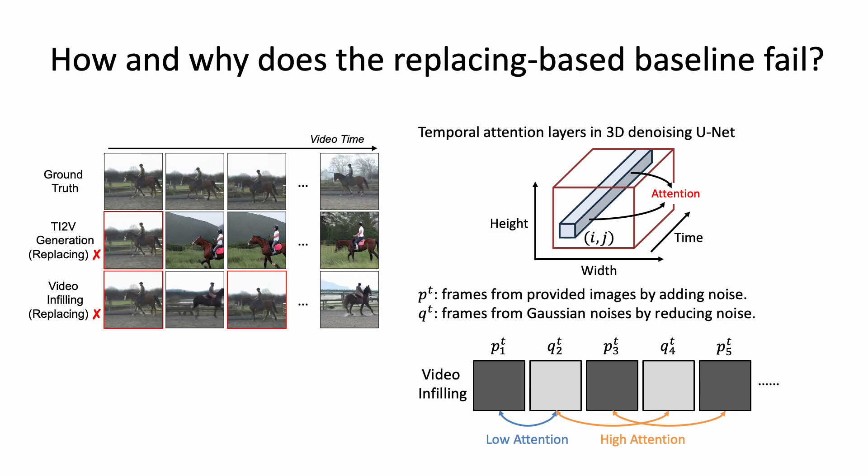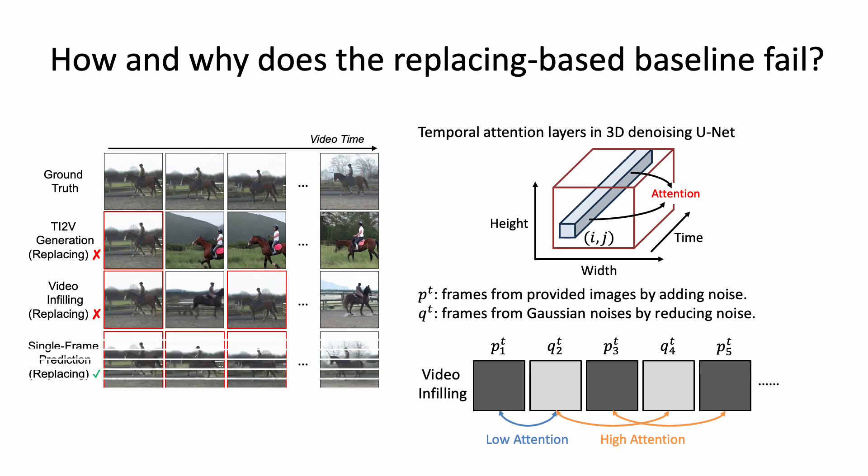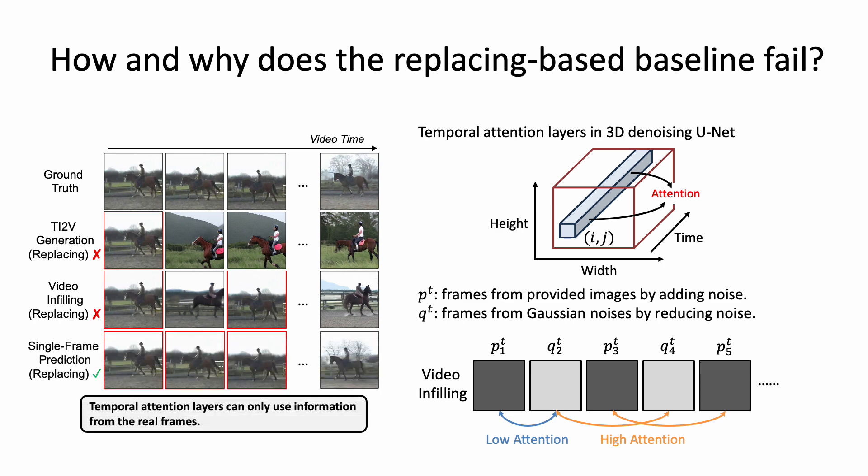If we further simplify the task to single frame prediction, in which all the other frames in the video are given, in this setting the temporal attention layers can only use the information from the real frames. Now the baseline can generate a consistent result.